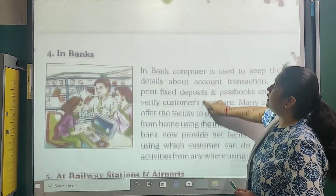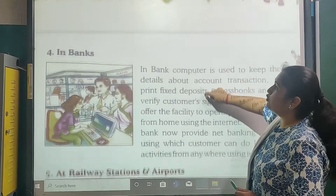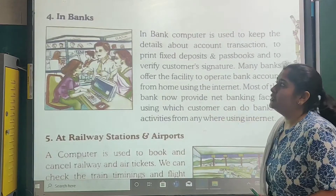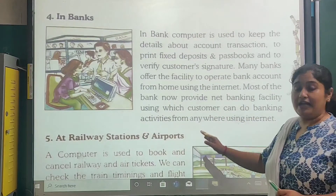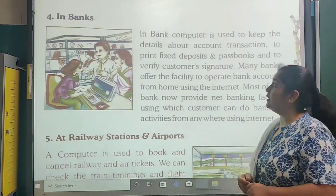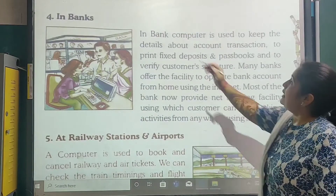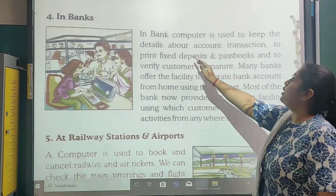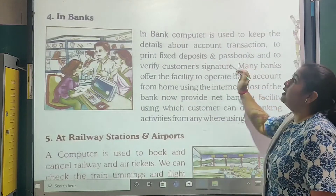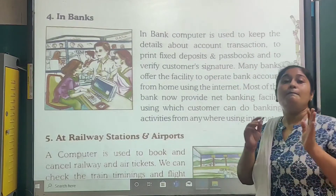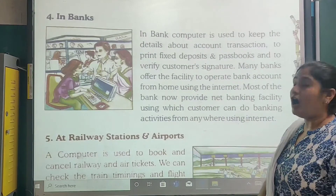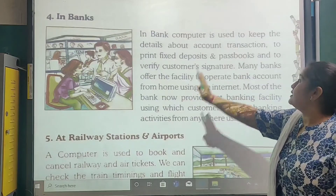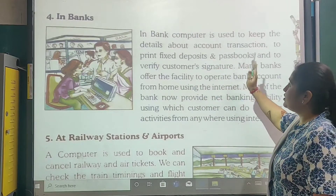Moving to page number 14, the fourth point is in banks. Computers are used in banks to keep the details of account transactions. For example, if your account is in a particular bank, they keep your name, address, mobile number, Aadhaar card number, and bank card number — all these details and account transactions are saved in a computer.